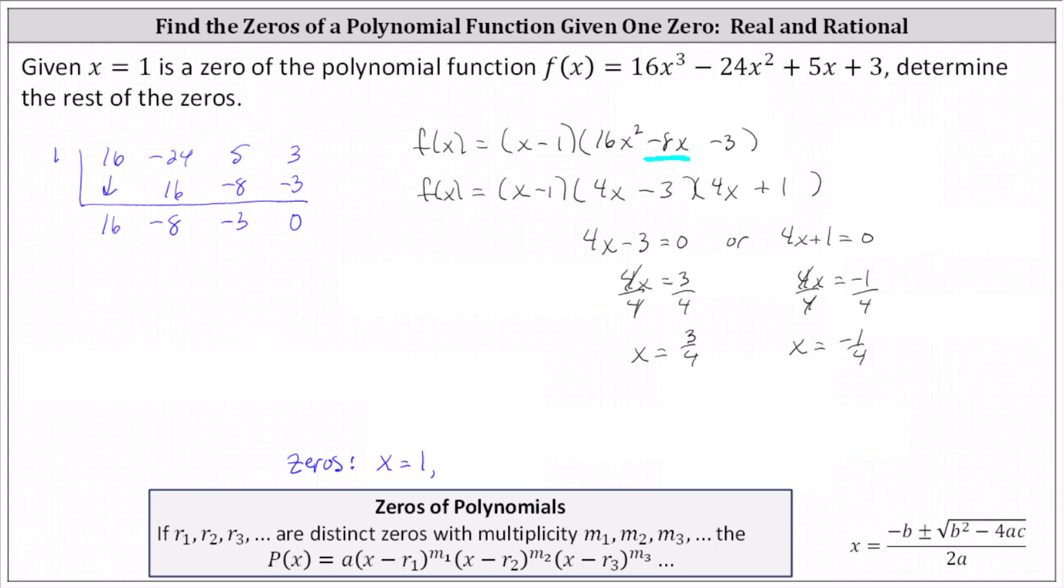Let's record these below. Because we have a degree three polynomial function, and we found three zeros, we know we have all of the zeros.